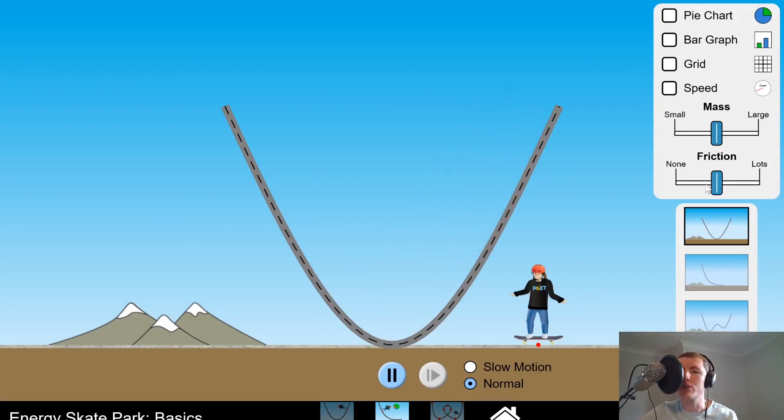If however, we introduce friction into the scenario, then that means that the skater will likely slow down quite quickly. So if I put them up here, you'll notice this time they've not come up to the same height, and that is because they're losing energy due to air resistance and due to friction between the tires of the skateboard and the track.